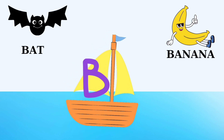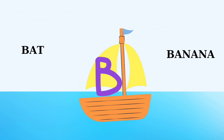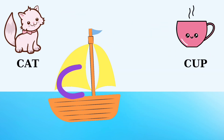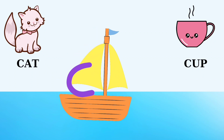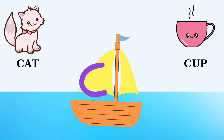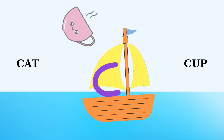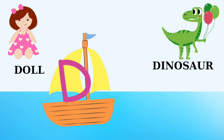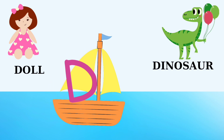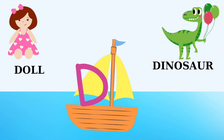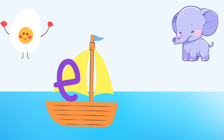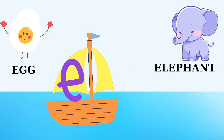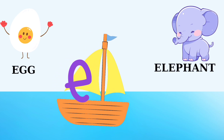B is for banana. C is for cat, C is for cup. D is for doll, D is for dinosaur. E is for egg, E is for elephant.